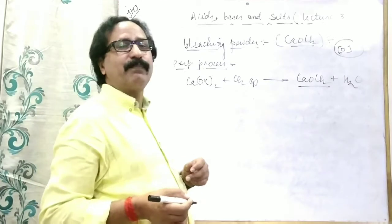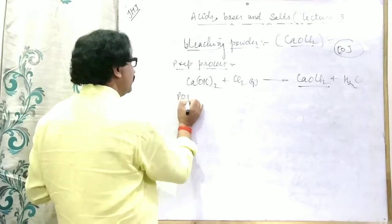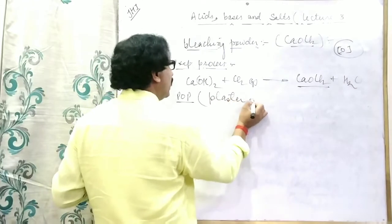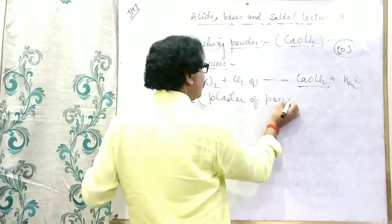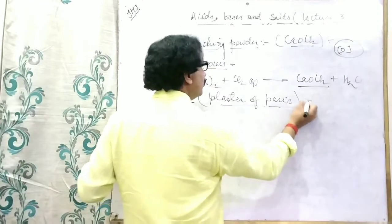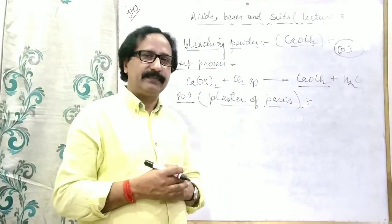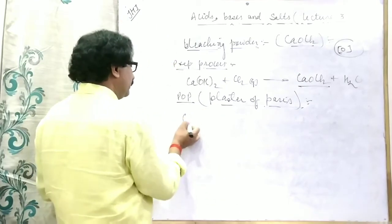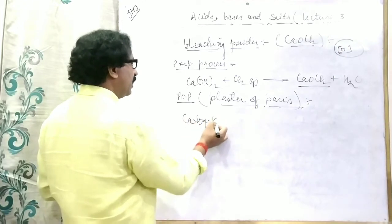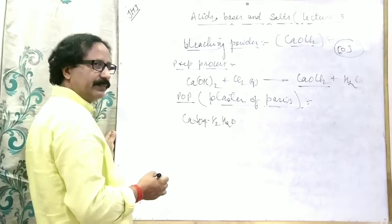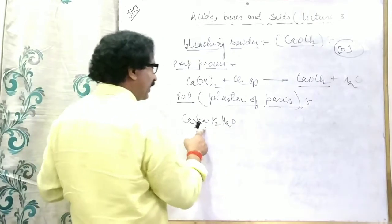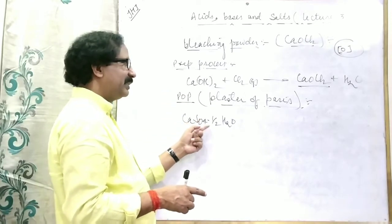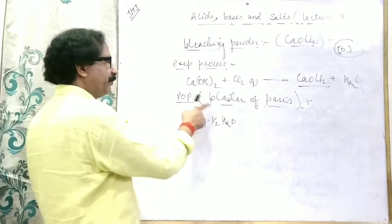The last one is POP — Plaster of Paris. Its chemical formula is CaSO₄·½H₂O. This is the chemical formula of POP.